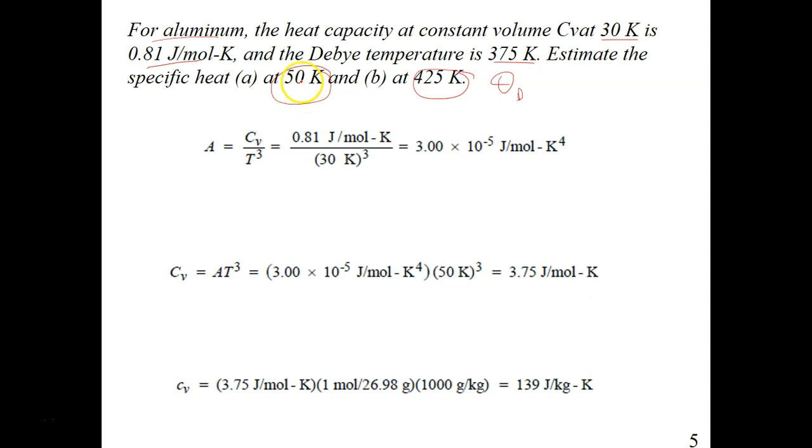You know that the first one, 50K, is definitely less than the Debye temperature. So you have to use the equation Cv equals A T to the power of 3. This will be the equation for the first part.